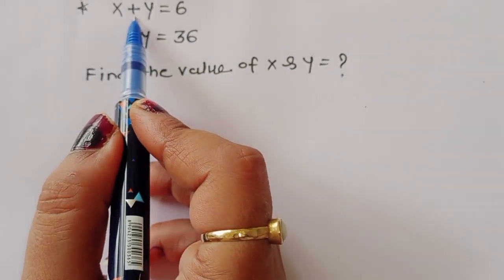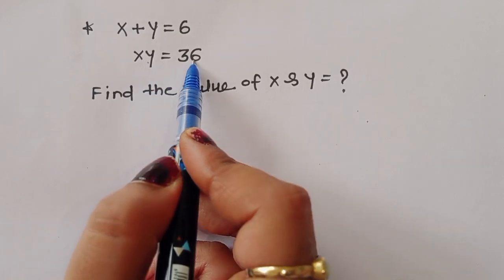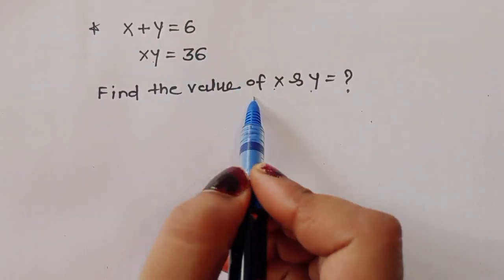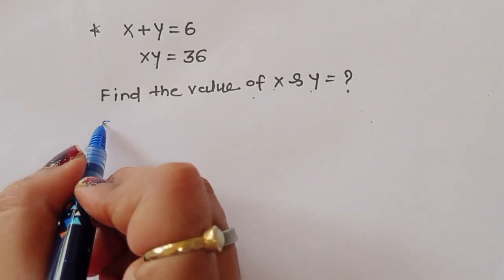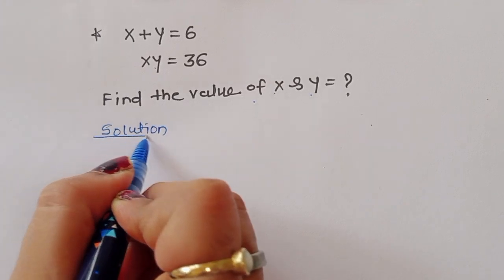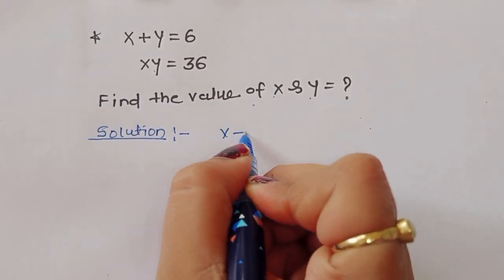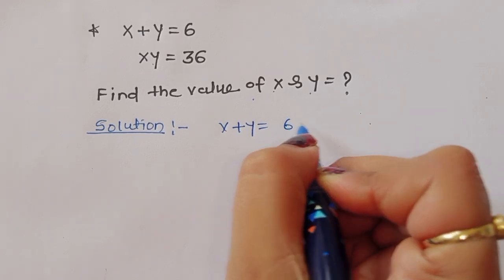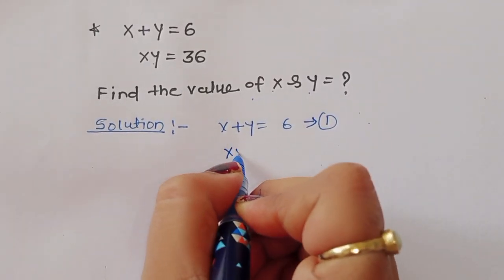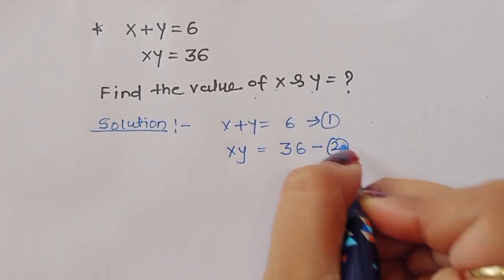The question is: given x plus y is equal to 6 and x times y is equal to 36, we have to find out the value of x and y. Let's see the solution. x plus y equals 6 is equation 1, and x times y equals 36 is equation 2.